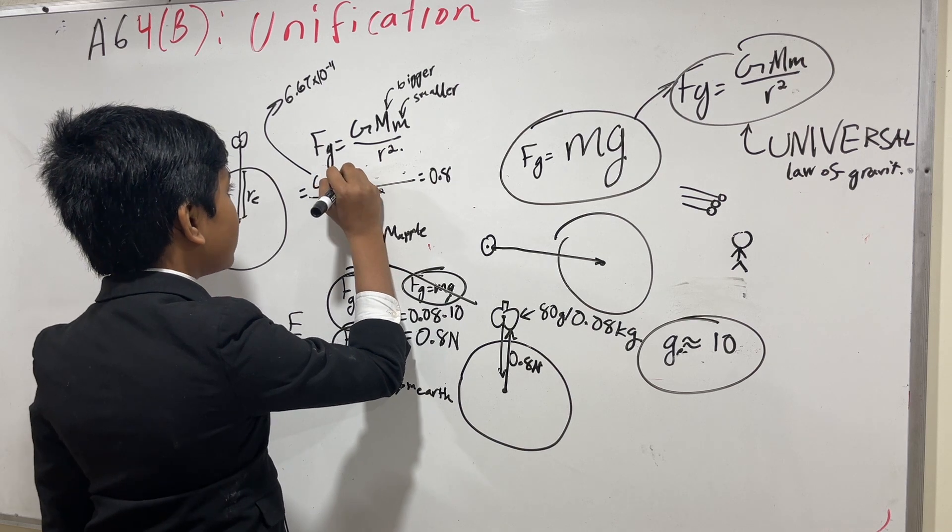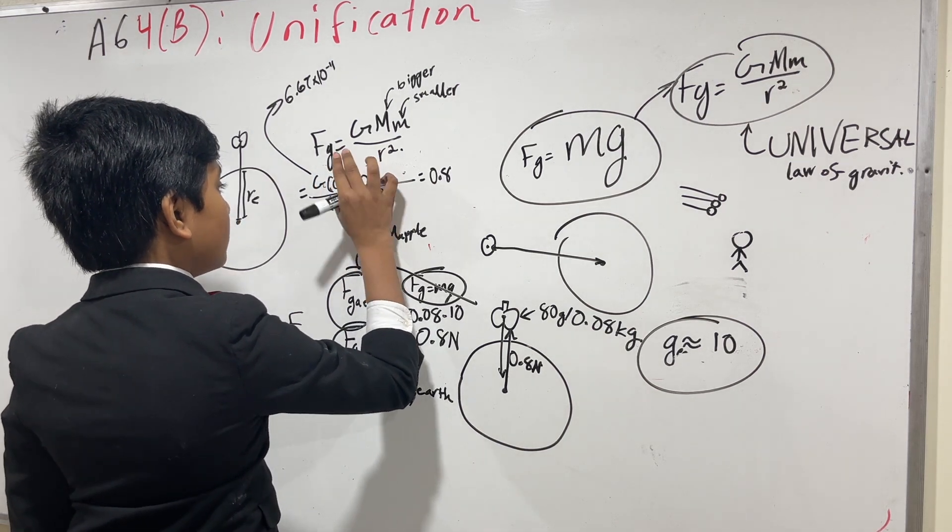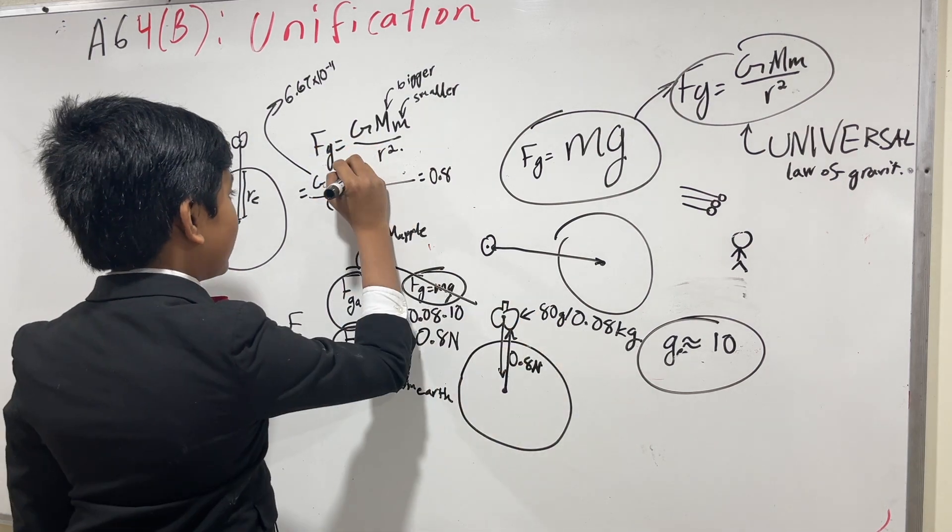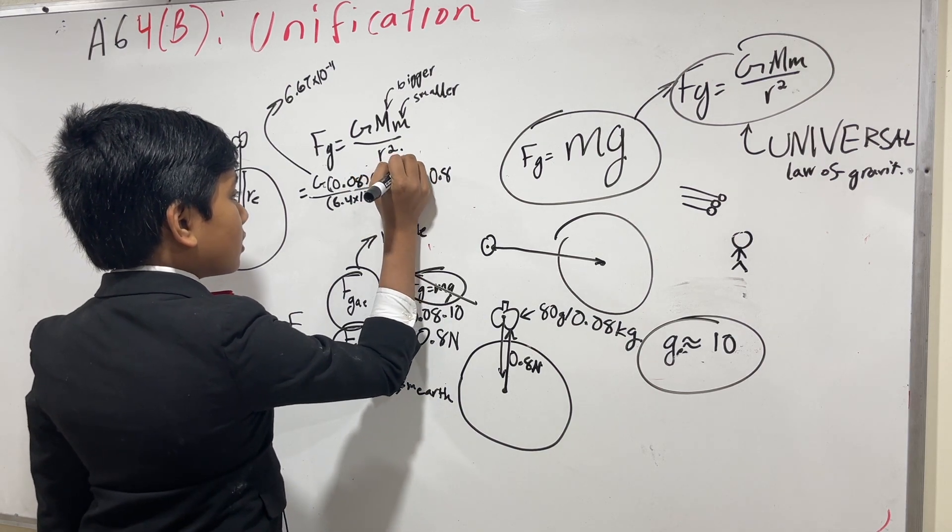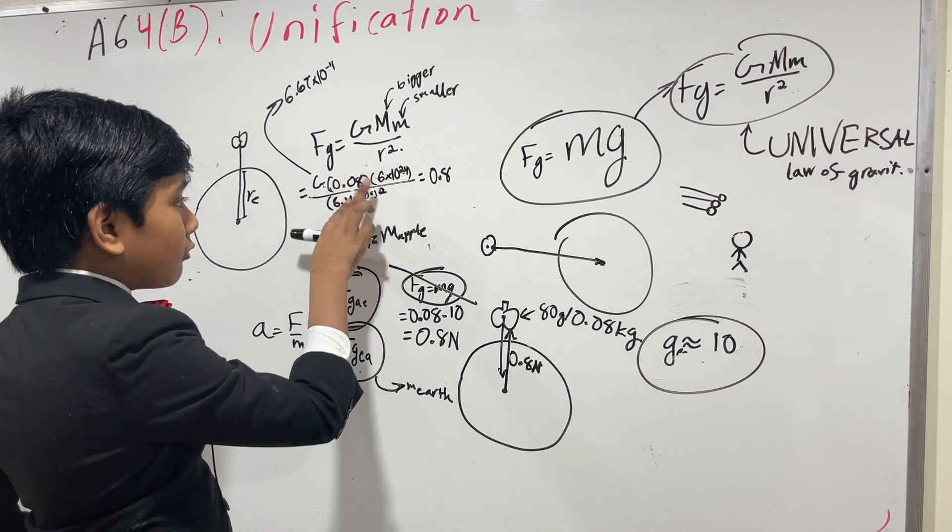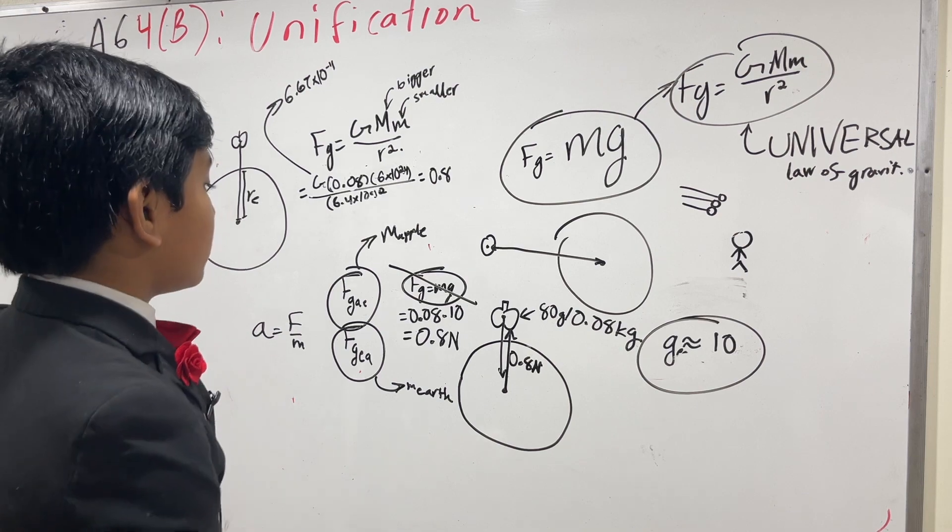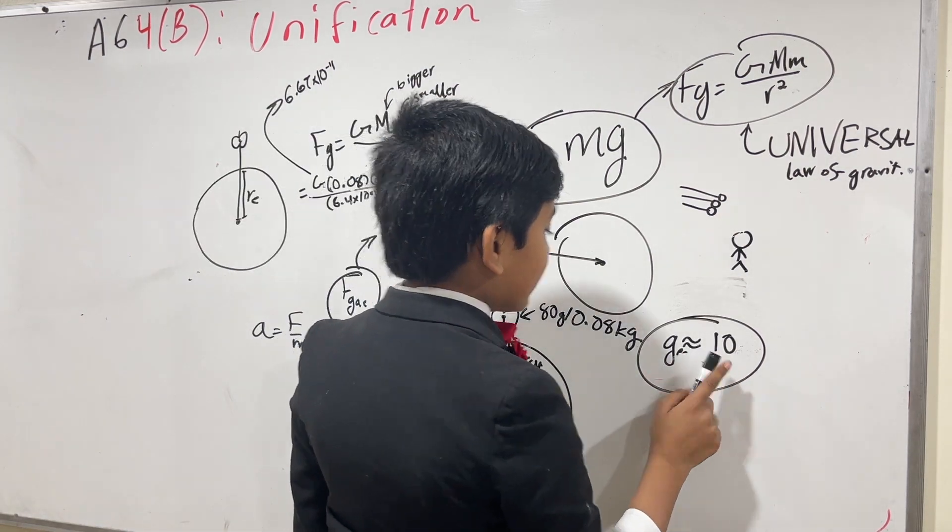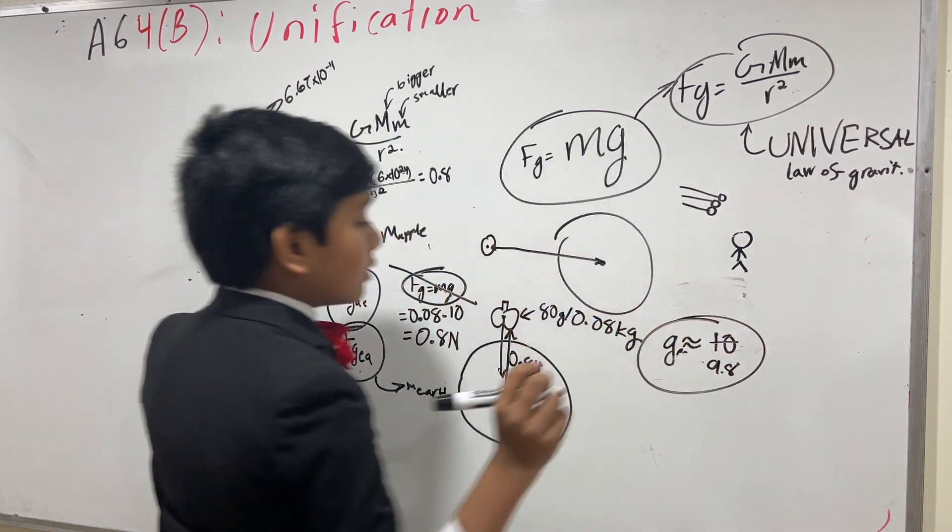Remember your arithmetic. Oh, shoot, that said 0.08 kilograms, sorry. Remember your arithmetic, kids. Multiplication has the commutative property. So, no matter which way you swap it, this is always going to be 0.8. Or, something a little smaller than that, because g not exactly 10, g is less than 10, actually 9.8.